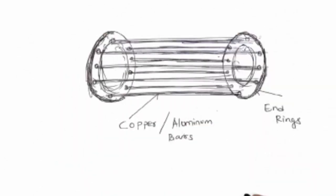Slip ring induction motors are usually large motors which require high starting torque. If you look at the squirrel cage induction motor, the rotor construction looks something like this — there are two external end rings and the middle portion consists of copper or aluminium bars.